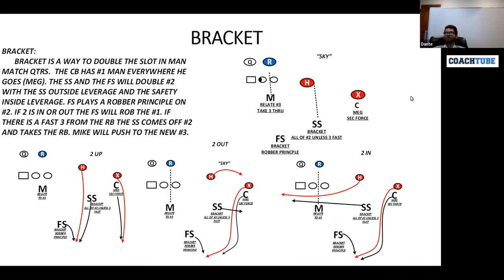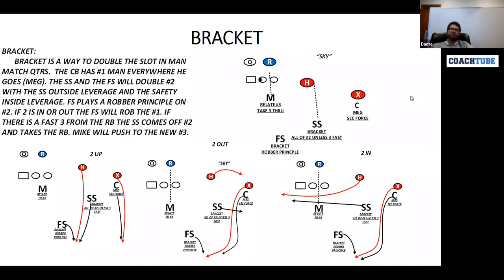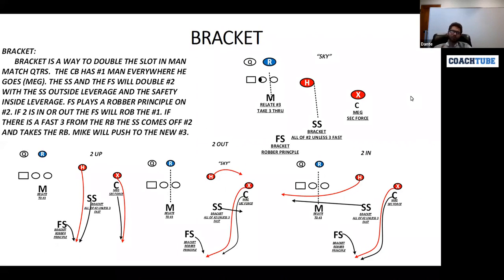In this case, if I'm the strong safety, my free safety is my help. My free safety is what I call a robber principle. He'll be ten-by-two to a normal split of a number two. If the number two receiver gets displaced — so he has a plus split — the furthest we'll get is an apex between number two and the MLS current. He's going to read run-pass. On pass, he'll snap his eyes to number two. He's going to be using a scooch technique with his inside foot up because he's inside leverage, scooching back and keying number two.